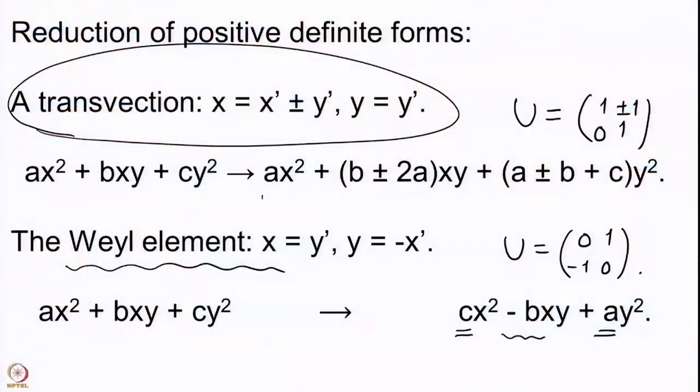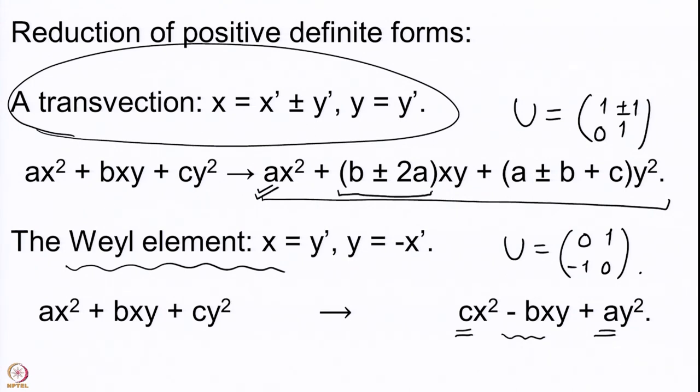The transformation given by the transfection has this description: a remains unchanged, and b can be made smaller or bigger by multiples of 2a. So this is the change happening for b, and there is some change happening for c, but that can be taken care of.